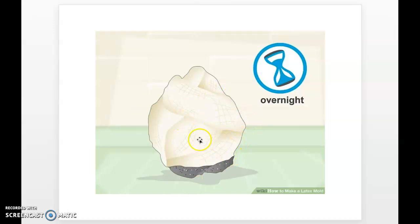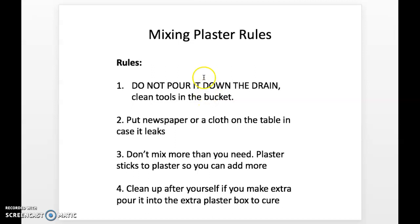At the end of it, you need to let it dry like overnight so that the latex is really dry. Then you're going to mix plaster. Rules that are really important: Do not pour it down the drain. It'll clog your drain up at home. You're going to want some type of bowl or bucket. You can use an old milk jug. It works really well if you have a milk container left behind. Cut off the top and use that. You want to put something down like newspaper or cloth so you don't get it everywhere. Don't mix more than you need because you need the extra for other things. Plaster sticks to plaster so you can add a bit more. Also, it'll stick to wood, tables, all kinds of things, so you need to be careful. If you have extra at the end, I recommend pouring it into the trash or into a box that's sealed.